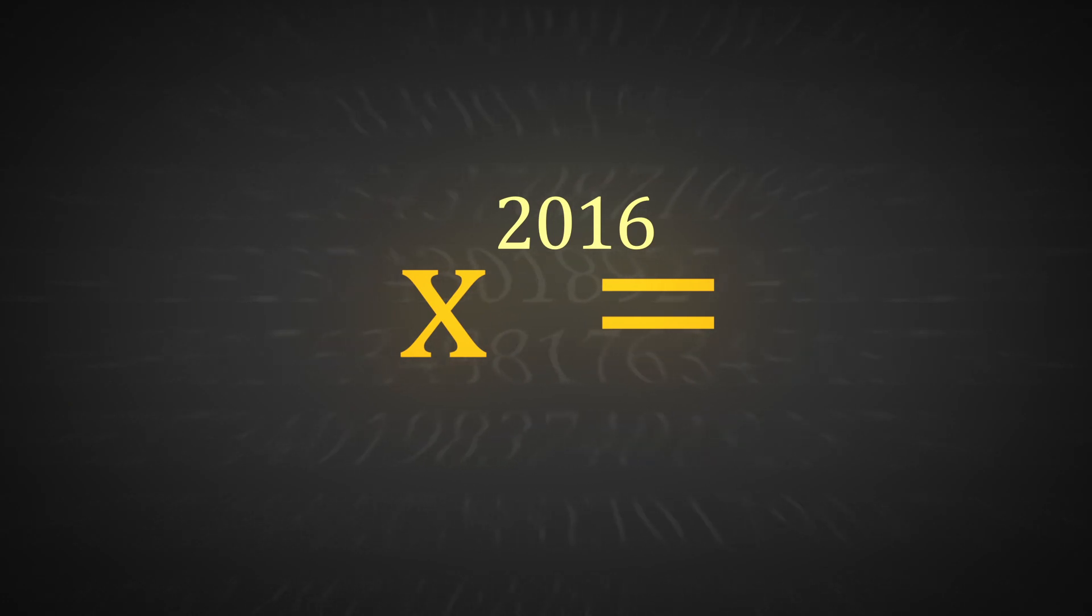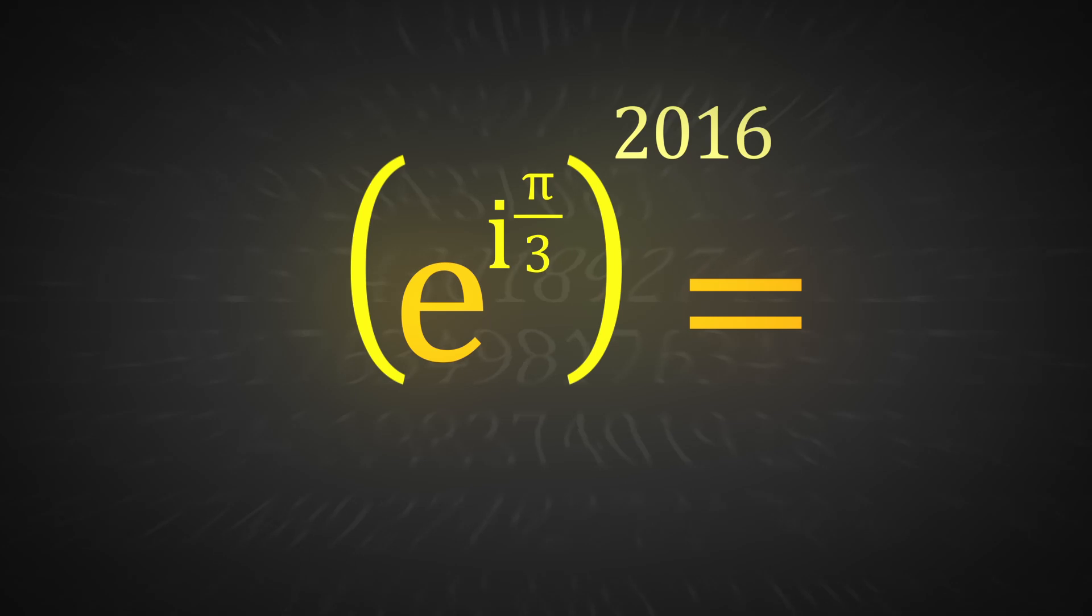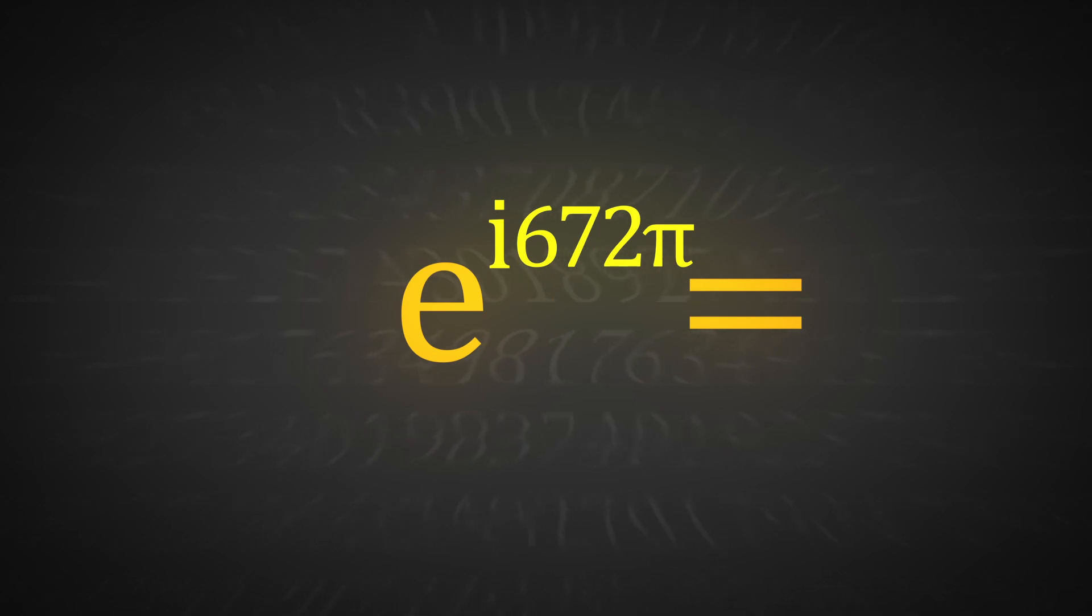All we have to do afterwards is to substitute x for e to the pi divided by 3 multiplied by i, which simplifies to e to the i multiplied by 672 pi.